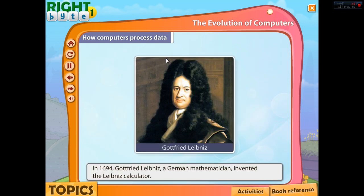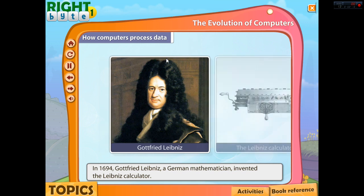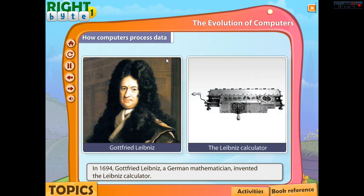In 1694, Gottfried Leibniz, a German mathematician, invented the Leibniz calculator. Unlike the previous machines, the Leibniz calculator could add and subtract numbers, as well as multiply and divide using wheels. The Leibniz calculator was considered to be a breakthrough in advanced calculation.